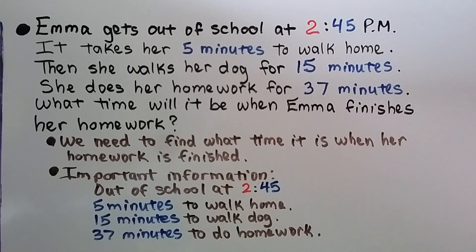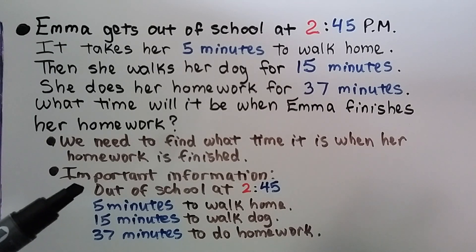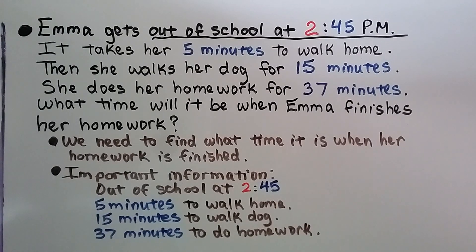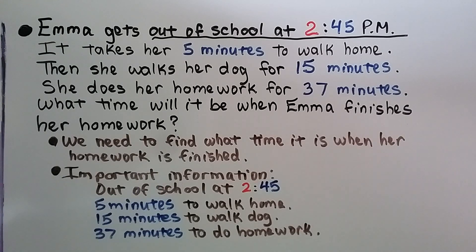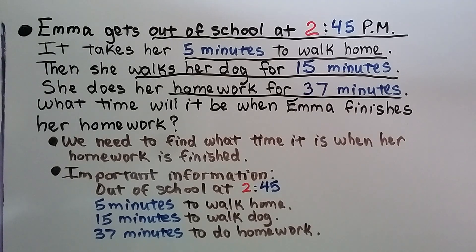Problem: Emma gets out of school at 2:45 p.m. It takes her 5 minutes to walk home, then she walks her dog for 15 minutes, and she does her homework for 37 minutes. What time will it be when Emma finishes her homework? We need to find what time her homework is finished. We underline the important information: out of school at 2:45 p.m., 5 minutes to walk home, 15 minutes walking the dog, and 37 minutes for homework.